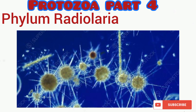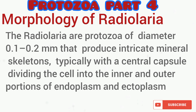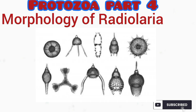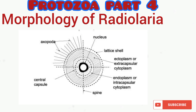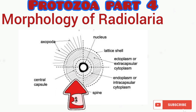Radiolaria are among the most beautiful of the group Protozoa. They are amoeboid protists, hence they belong to the clade amoeboid protozoa. They are majorly marine and planktonic — they are actually zooplankton. Radiolaria diameter ranges from 0.1 to 0.2 millimeters. They produce skeletons which can take various forms ranging from spherical to rod-like, and they exhibit biradial or radial symmetry. The central capsule divides the cytoplasm into endoplasm and ectoplasm.